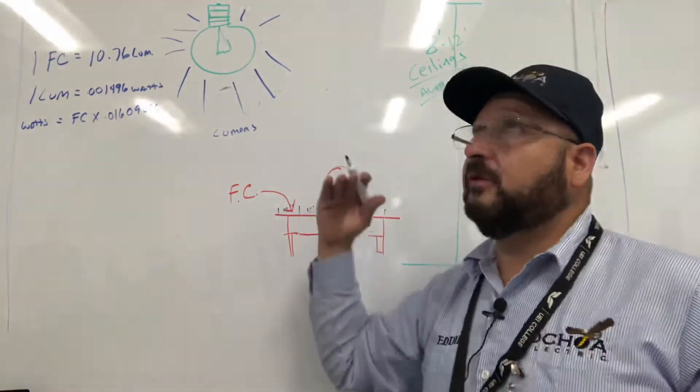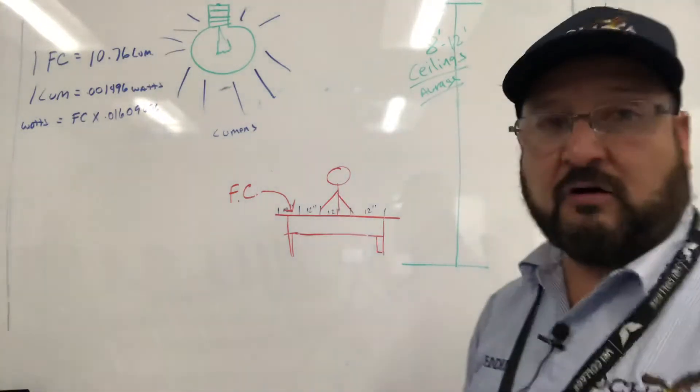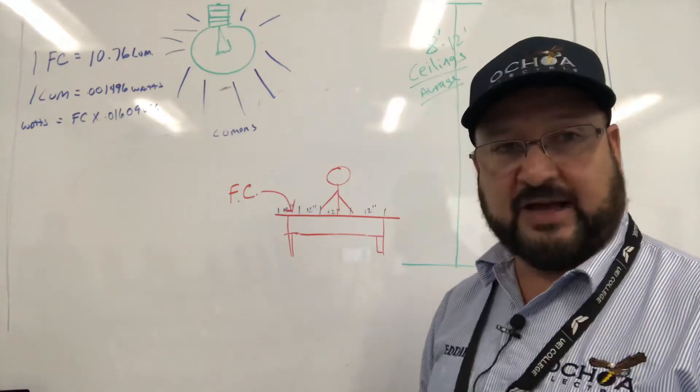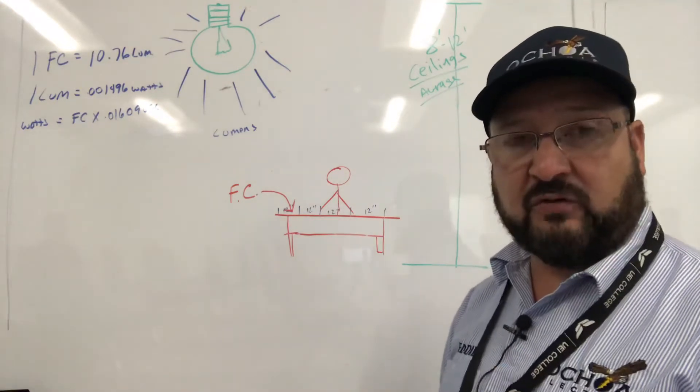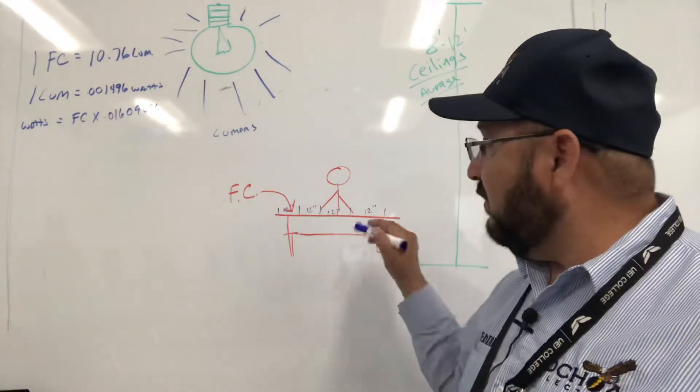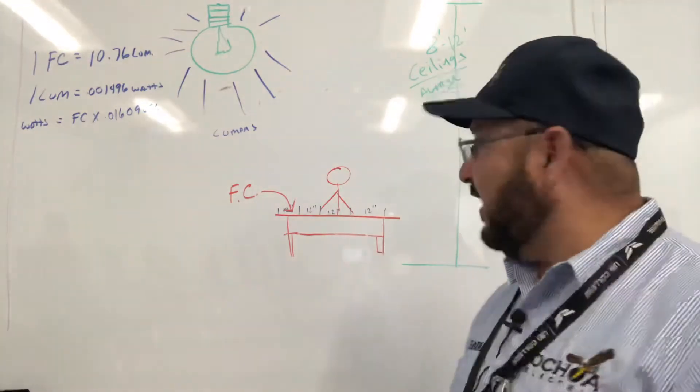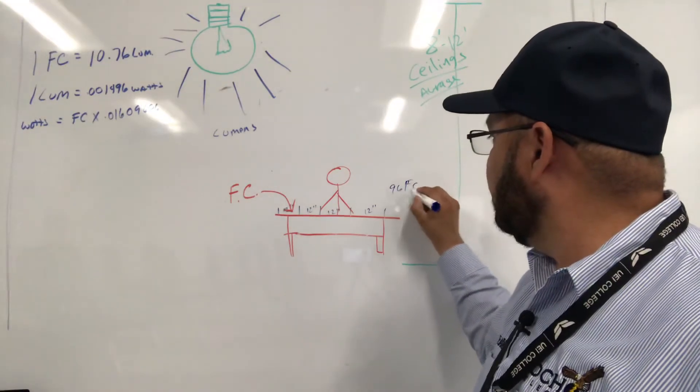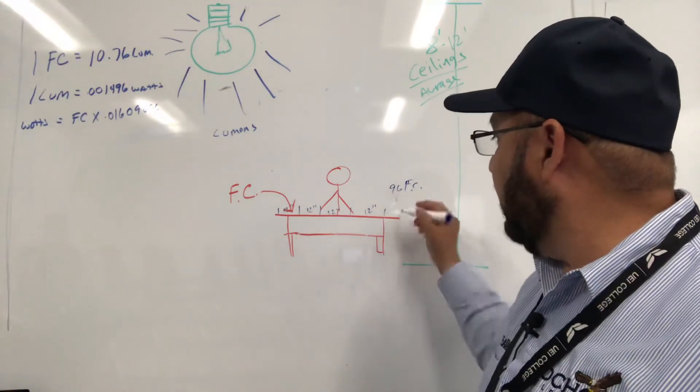Right now, the lights I dimmed, they are at 16 foot candles. I have a measurement on my phone, 16 foot candles. That's a dimming amount. And right now, when I have the lights full blast, I'm at 96 foot candles. That's a lot of light on my desk.